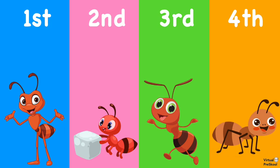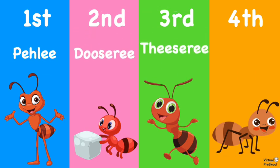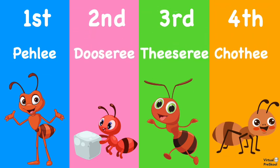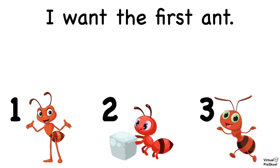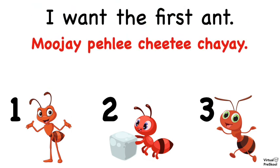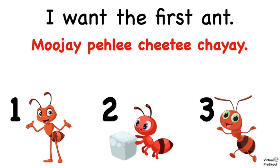If we wanted to select the first, second, third, or fourth ant, then we would use the feminine inflections for each adjective: pehli, dusari, tisari, and choti. For example, 'I want the first ant' is mujhe pehli chiti chayyeh. Again, mujhe pehli chiti chayyeh.